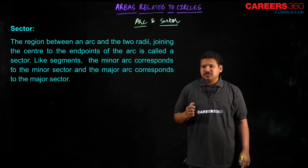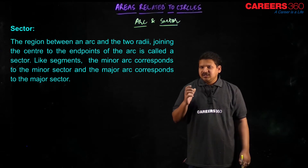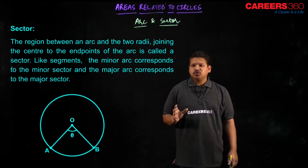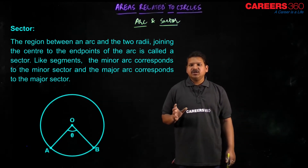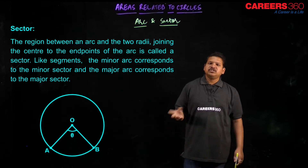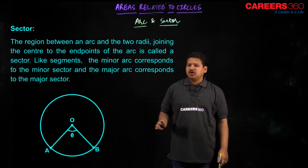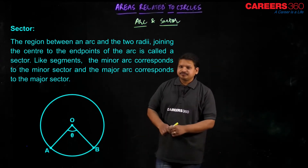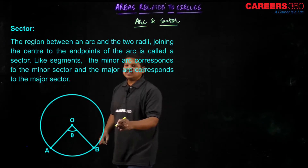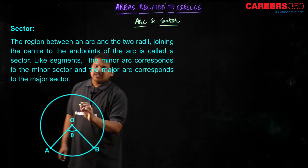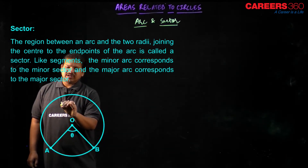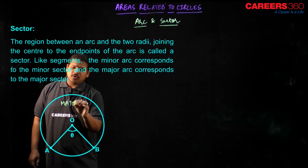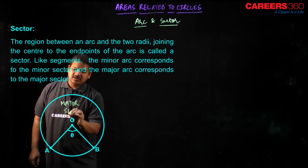Let us have a look at the definition of sector: the area between an arc and two radii joining the centre to the end points of the arc is called a sector. As you can see, this is a sector, and this right here is a major sector because it is made up of the major arc.